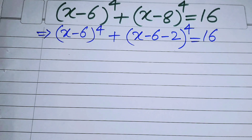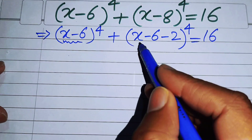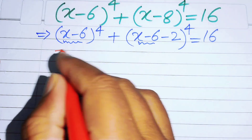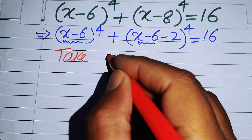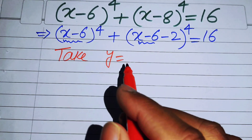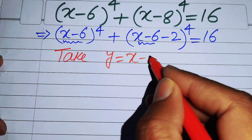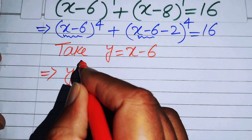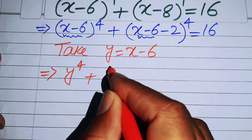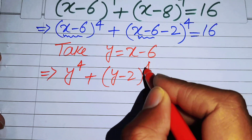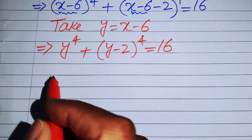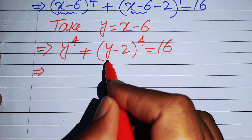Now we see that x - 6 is the common expression, so we let y = x - 6. The above quartic equation then becomes y^4 + (y - 2)^4 = 16, and now we focus on simplifying this expression.